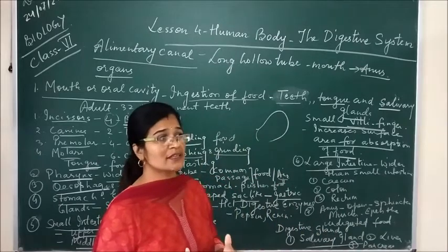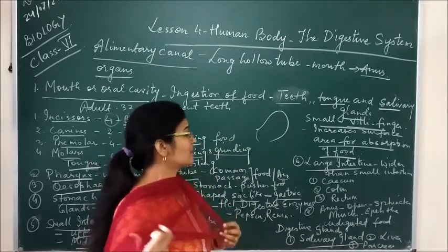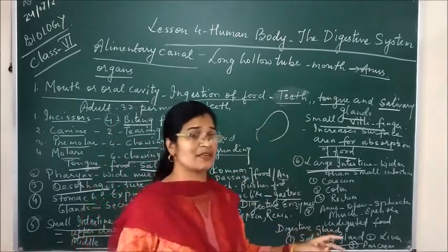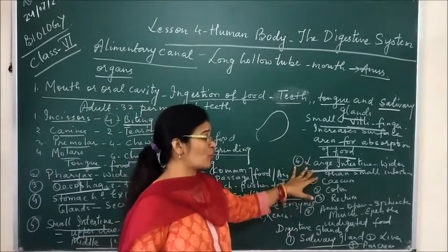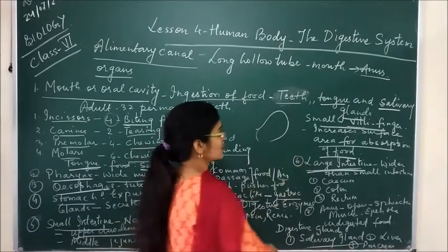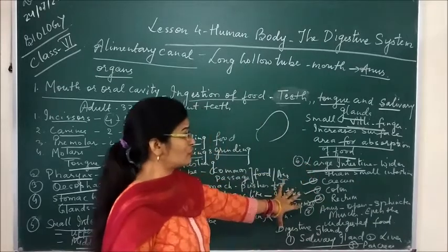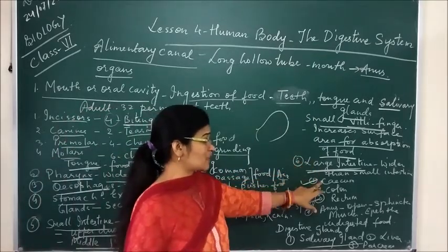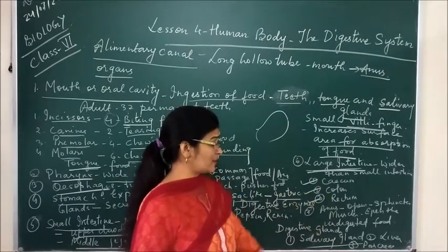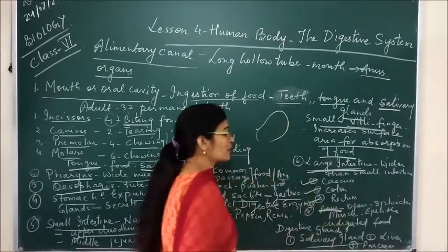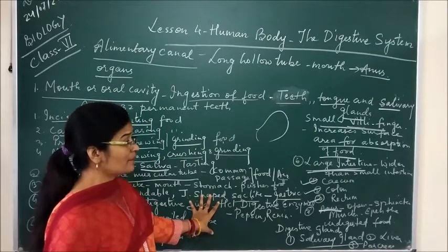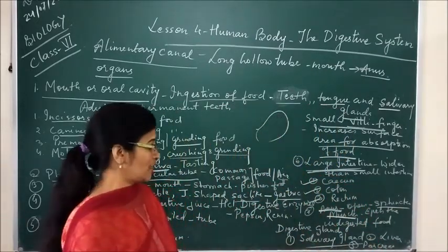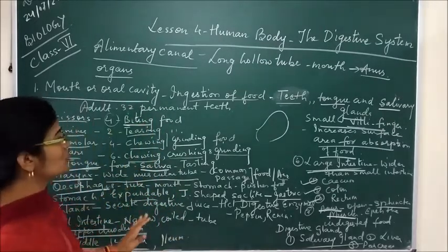The increased surface area due to the villi in the small intestine means more and more nutrients can be absorbed. After the small intestine comes the large intestine. The difference is that small intestine has a greater length but less thickness, while the large intestine is wider. The large intestine consists of three parts: cecum, colon and rectum. The unabsorbed food passes through cecum, colon and rectum, and then enters the anus. The anus is the last opening of the alimentary canal and has sphincter-type muscles which help to expel undigested food outside the body.